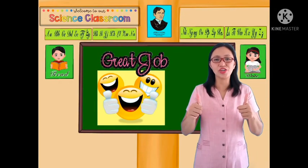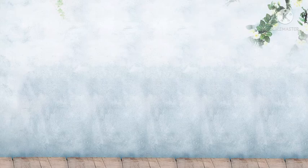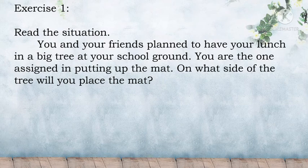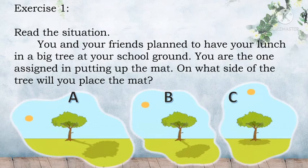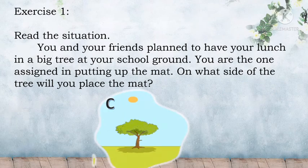Great job! We answered all Andy's questions. Now, answer the following exercises to see if you understand our lesson for today. Exercise 1: Read the situation. You and your friends plan to have your lunch under a big tree at your school ground. You are the one assigned to put up the mat. On what side of the tree will you place the mat? A, B, or C? The answer is Letter C.